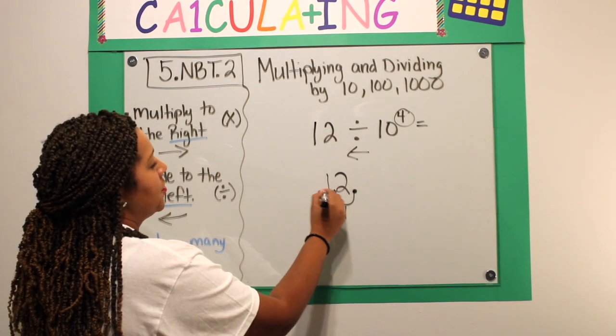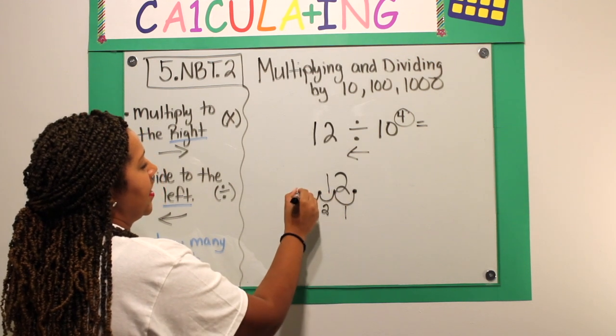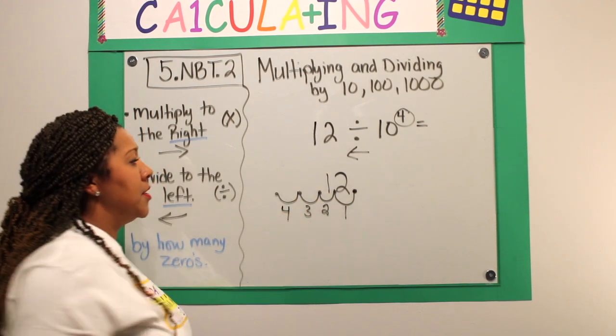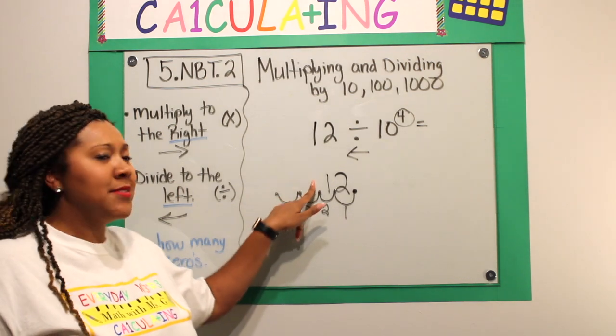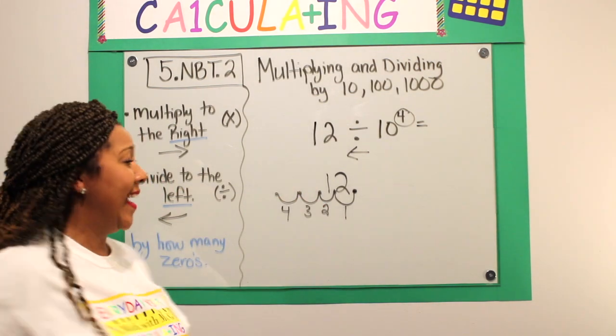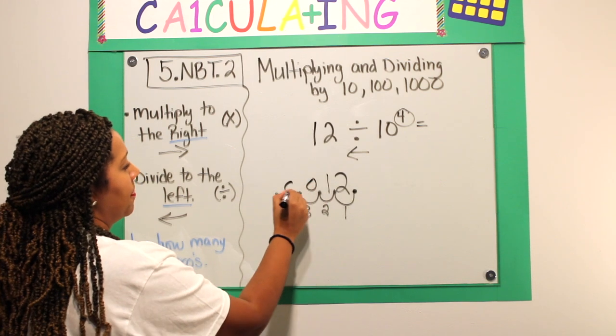One, two, three, and four. Here I have some empty spaces and I don't have anything. That's when you're going to add a zero.